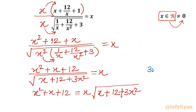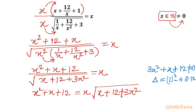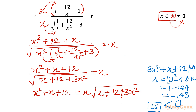Now the important point is the denominator cannot be 0, so 3x squared plus x plus 12 cannot be equal to 0. Let us check the discriminant: b squared minus 4ac equals 1 squared minus 4 times 3 times 12, which is 1 minus 144, giving negative 143. It is negative, so only complex solutions exist — there is no real-value constraint from this denominator being zero. So we can proceed and multiply.